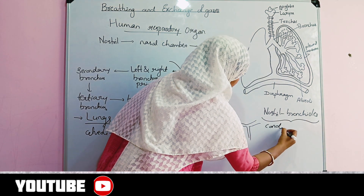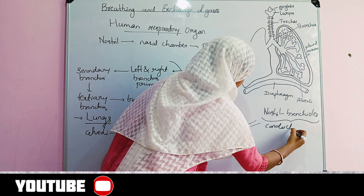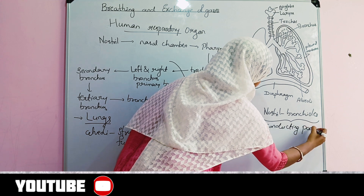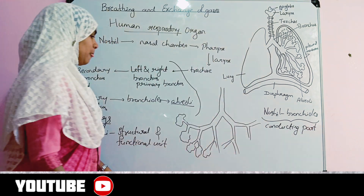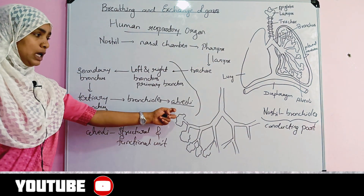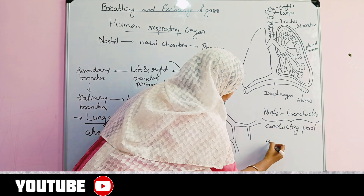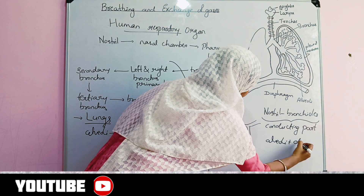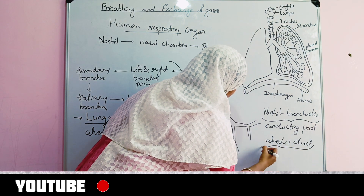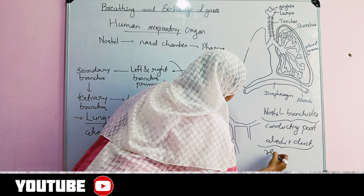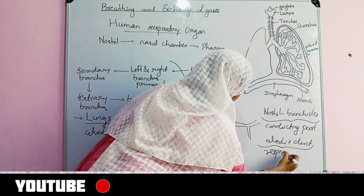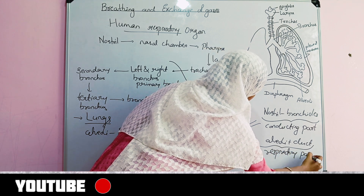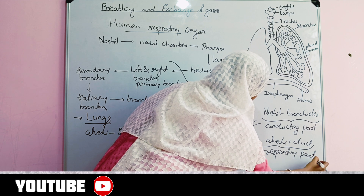From the nostril up to the bronchus is called the conducting part of the respiratory system. And the alveoli region is the respiratory part.